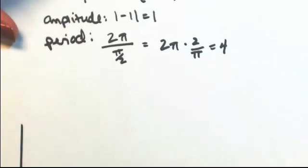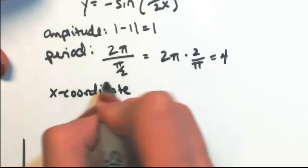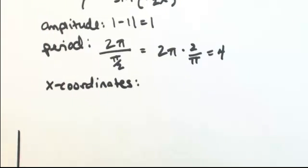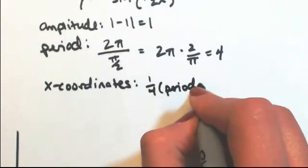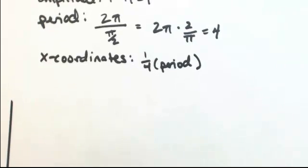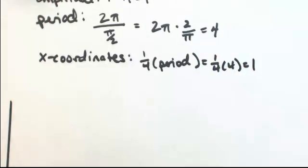To find the x-coordinate values, we take a quarter of the period, because each one represents a quarter. So a quarter of 4 tells you that you go by 1's.